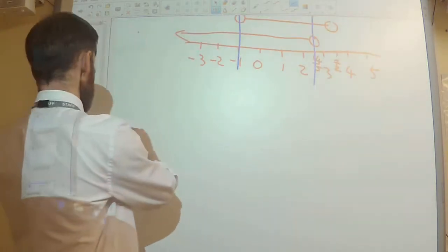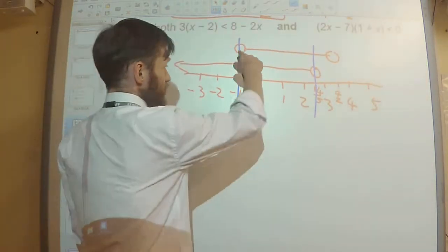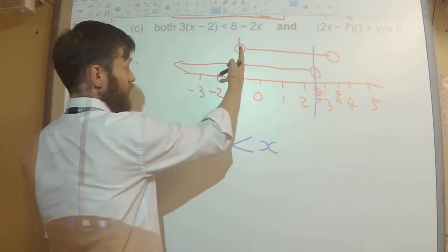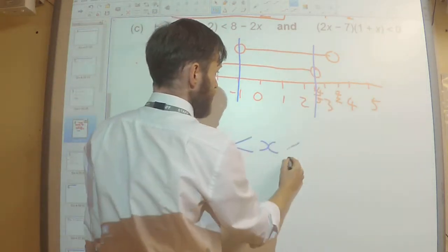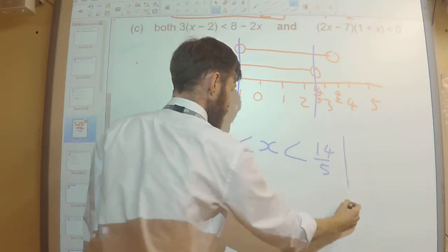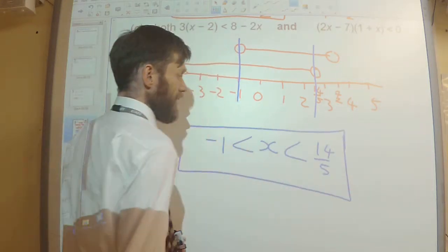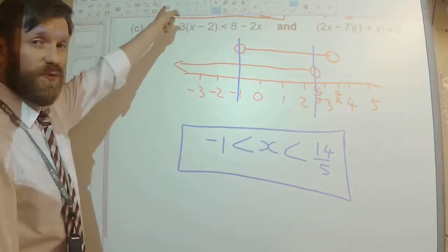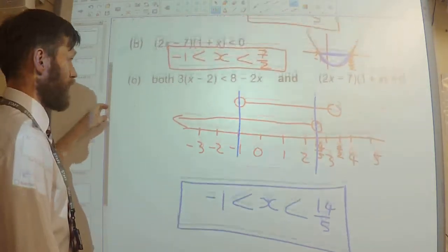So the solution, then, where both inequalities are true, is when x is greater than minus 1, but less than 14 over 5. There we go. So in between these values satisfies both the linear and the quadratic inequality.